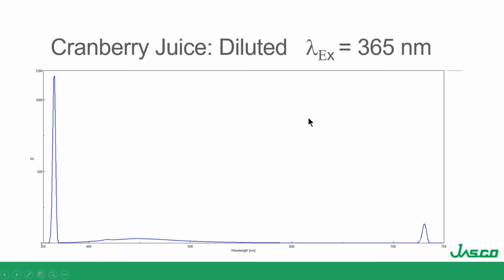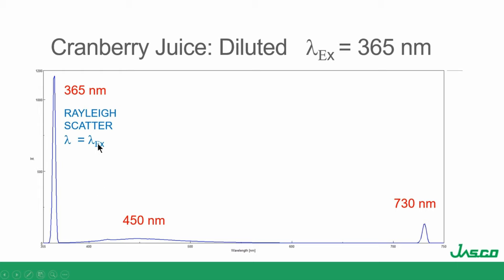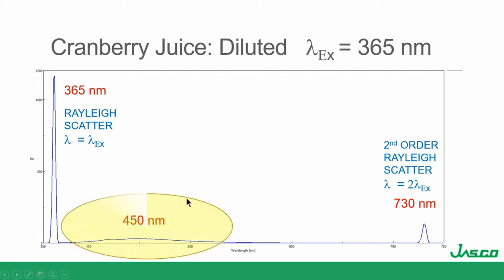This is diluted cranberry juice. The big band at 365 nm — that's just Rayleigh scatter, lambda equals lambda excitation. At 730 nm, that's second order Rayleigh scatter at double excitation. The band at 450 nm — what is it? It could be fluorescence. But it could also be Raman, so we need to check it further.